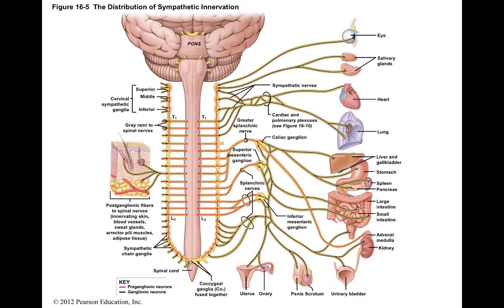Looking at the organs: the sympathetic system goes to the smooth muscle of the iris — specifically the dilator muscles — causing pupil dilation in fight-or-flight. Salivary glands dry up. The heart beats faster. In the lungs, the bronchioles dilate so more air can enter, and the diaphragm contracts faster so you breathe faster. The entire digestive system is inhibited — glands stop secreting mucus and digestive enzymes — and we divert energy to the heart and lungs.